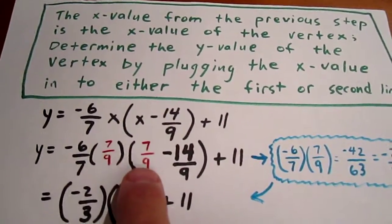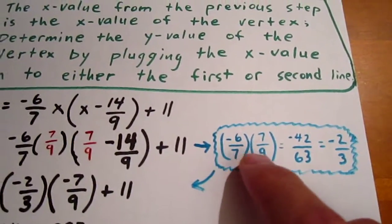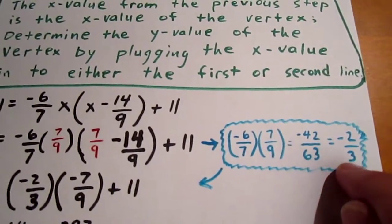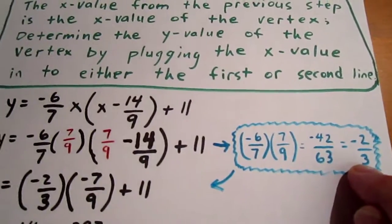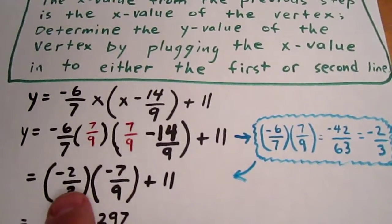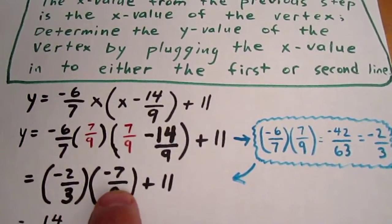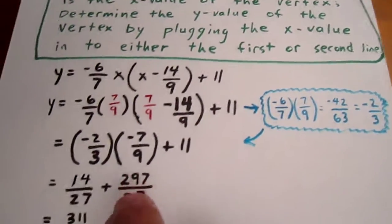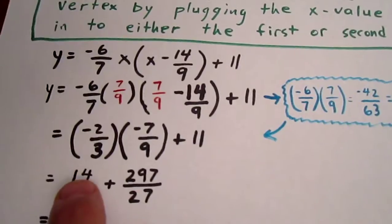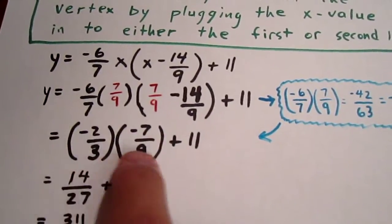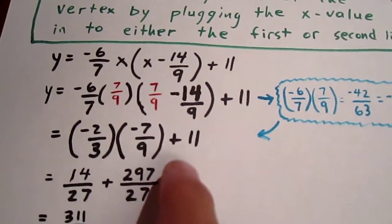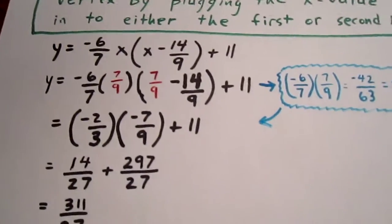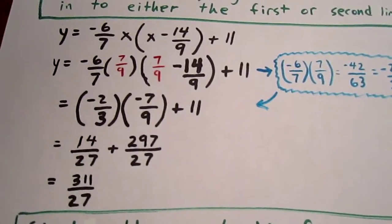Plugging in 7 9ths requires us to multiply negative 6 7ths times 7 9ths, which nicely reduces to negative 2 3rds. Negative 2 3rds times negative 7 9ths, which we get by doing this subtraction, is the same as 14 over 27 plus 297 over 27, which is what 11 equals. And that gives us 311 over 27.